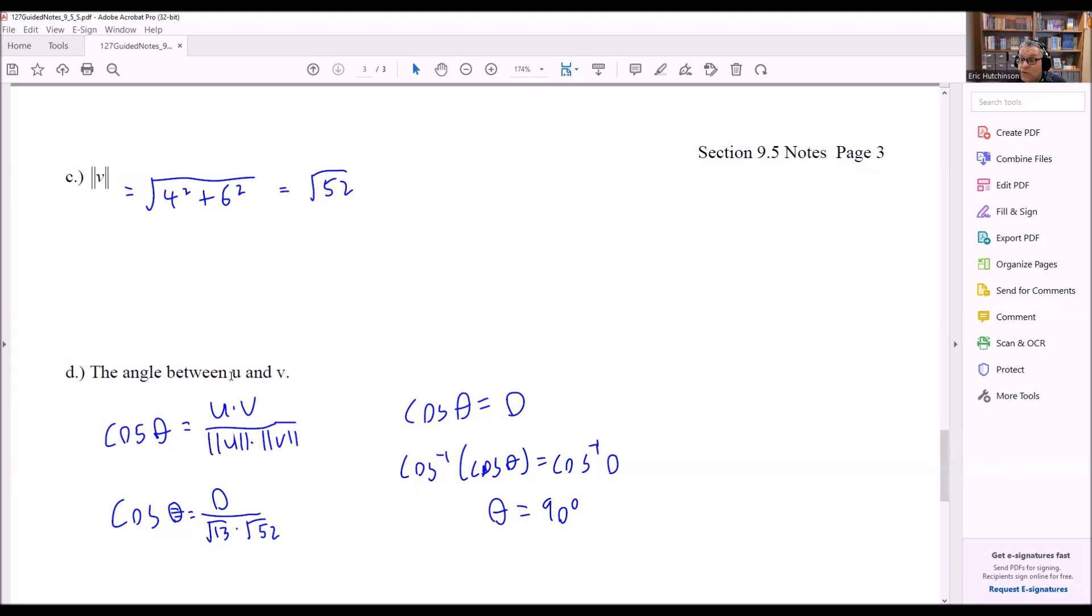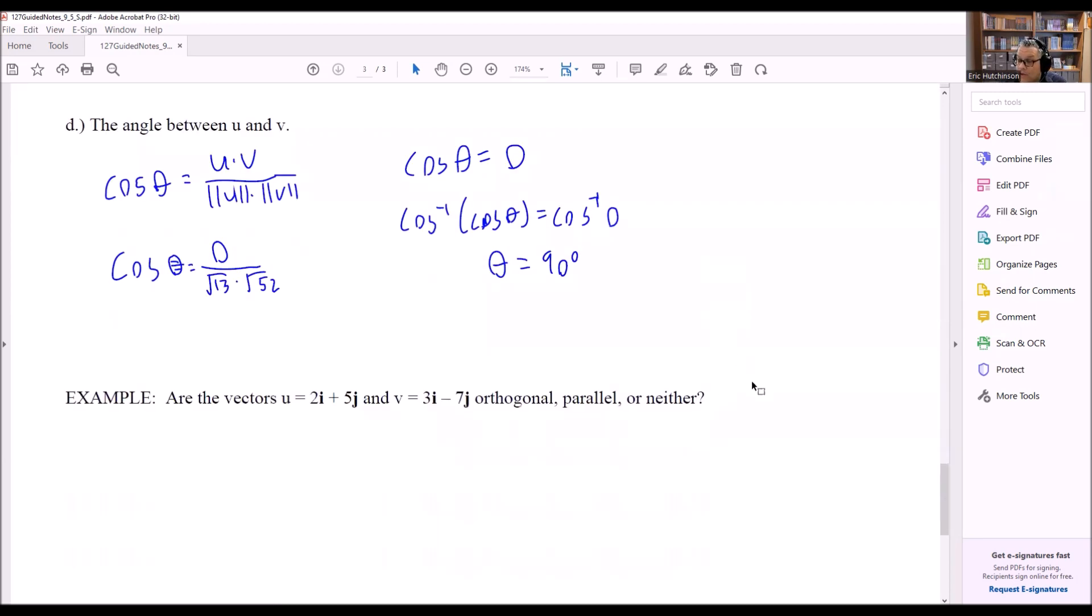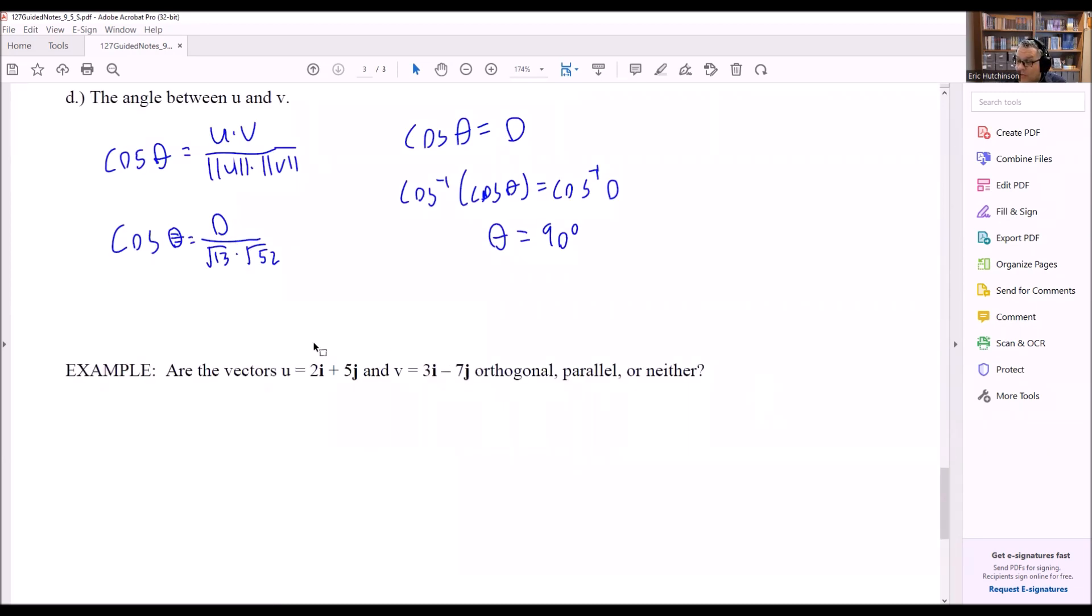So that's the angle between u and v, and this is 90 degrees. Now, this one asks if the vectors are orthogonal, parallel, or neither. Well, based on what we talked about previously, because we got 90 degrees exactly for our theta, that means that it's orthogonal.